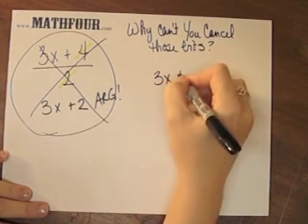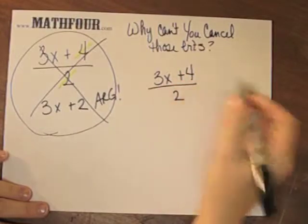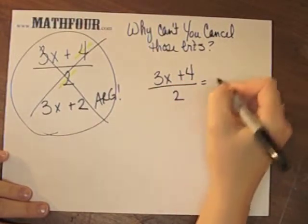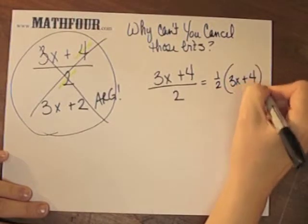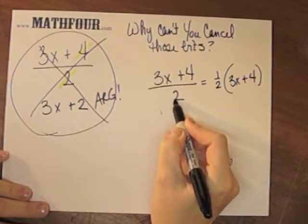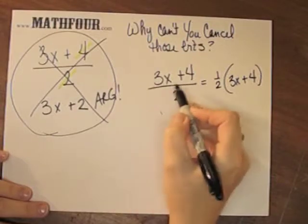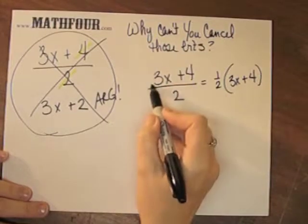3x plus 4 over 2 really means 1 half times 3x plus 4. See this little 2 underneath? This is actually taking this and splitting it in half.